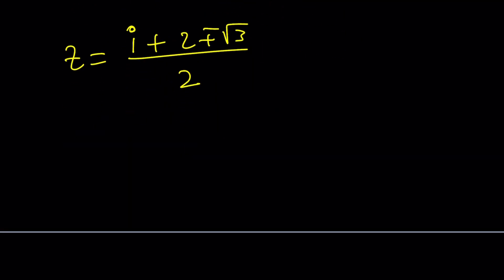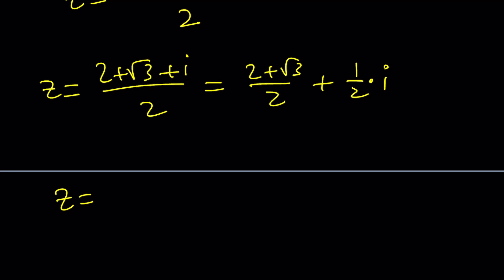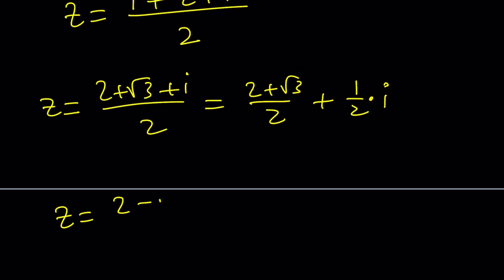But wait a minute, there are two answers. One of them is z equals 2 plus root 3 plus I divided by 2, or I can write it as 2 plus root 3 over 2 plus 1 half of I, so that it's in the A plus B I form, right? And the other solution is going to be z equals 2 minus root 3 plus I over 2. And again, that can be written as 2 minus root 3 over 2 plus 1 half of I. So imaginary parts do not change.